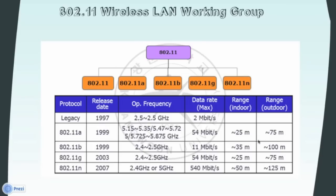802.11a and 802.11b were incompatible with each other; hence 802.11g emerged in 2003. It combines the best of both 802.11a and b, supporting bandwidth up to 54 Mbps and using the 2.4 GHz frequency, thus resolving backward compatibility issues. The newest IEEE standard in the Wi-Fi category is 802.11n, designed to improve on 802.11g by utilizing multiple wireless signals and antennas. When finalized, 802.11n connections should support data rates over 100 Mbps. Range for indoor and outdoor applications increases from 802.11a to 802.11n.